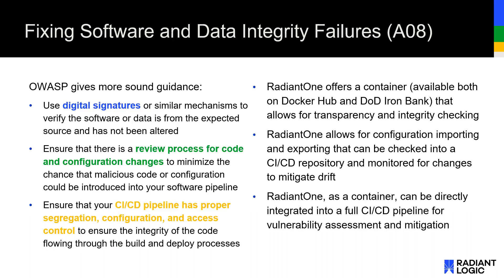On to fixing software and data integrity failures. OWASP's guidance ties back into fixing broken access controls — we should be confirming what we downloaded and confirming that it's what we expected. Typically we do this through checksums, which is a crude form of authentication. We should also be ensuring our configurations are valid and reviewable, and instituting access controls to ensure attackers can't make changes to those configurations — whether they're in GitHub or elsewhere. Radiant helps conform to this by offering thoughtfully integrated containers on both Docker Hub and DoD's Iron Bank, and we allow for configuration processes to be automated and those configurations to be auditable within a CI/CD infrastructure.